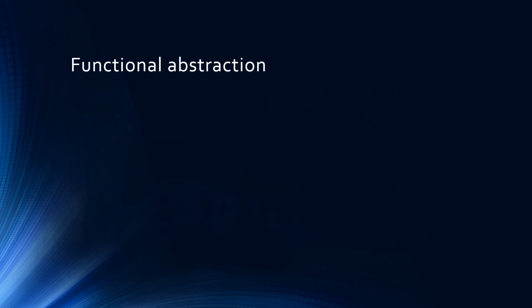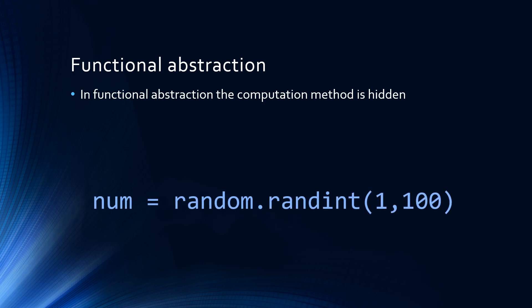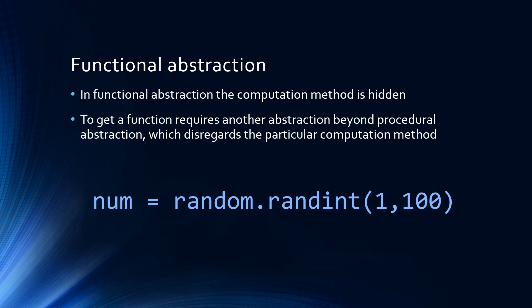With functional abstraction, the computation method is hidden. This means to get a function requires another abstraction beyond procedural abstraction, which disregards the particular computation method.